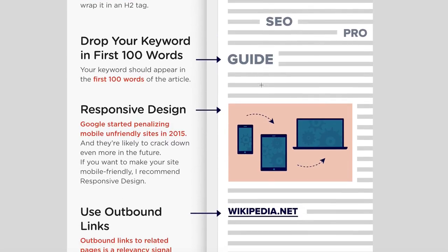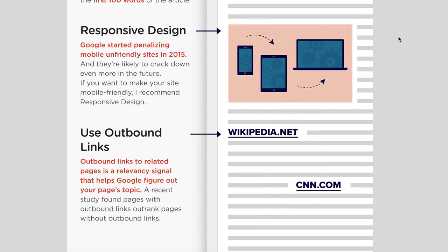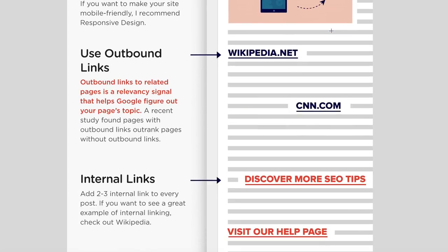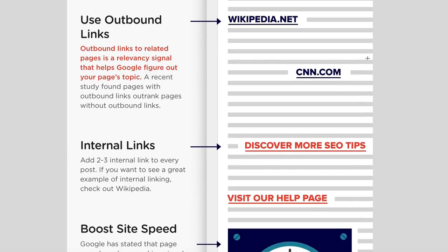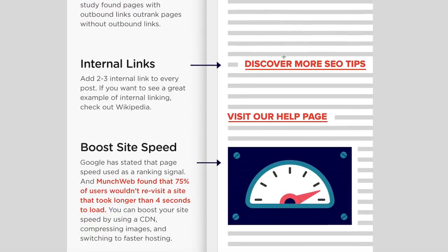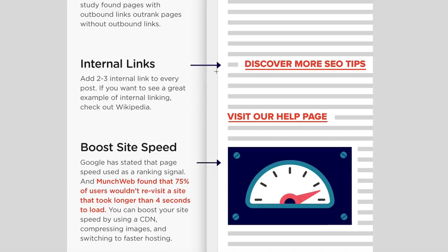Next thing is to insert your keyword into the first 100 words. The next tip is to ensure that you've got a responsive design — all the themes I recommend in my tutorials are responsive, meaning the site changes its look depending on the screen size. You should also use some outbound links in your content, probably affiliate links, but include other outbound links as well. And you want internal links too — linking through to other pages on your site.